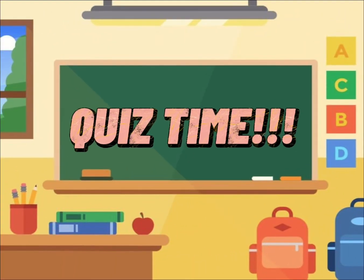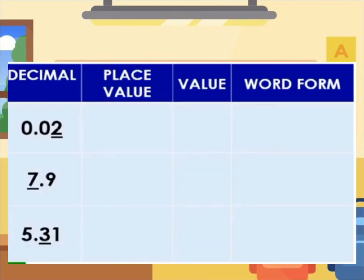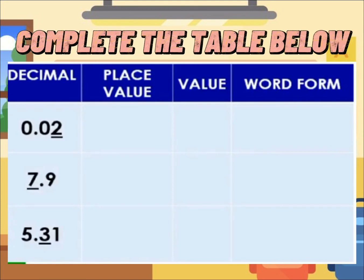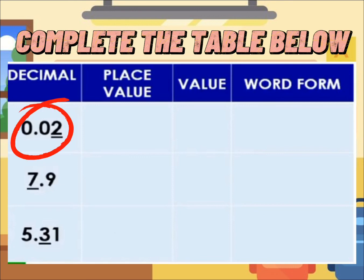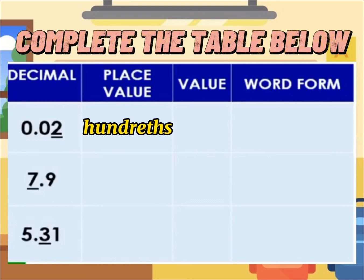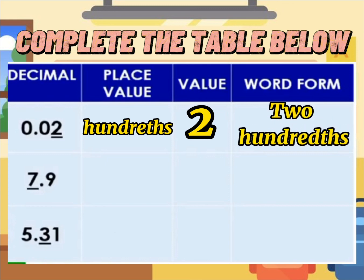It's quiz time! For our quiz today, you need to complete the table: find the place value and value of the underlined digit, and create a word form. Your timer starts now. Time's up! What is the place value of the first decimal? Very good — it is hundredths. How about the value? Very good — it is two. How about the word form? Very good — it is two hundredths.